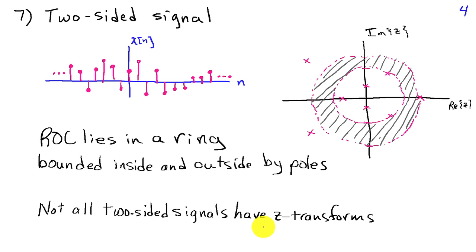The third case is if we have a two-sided signal. In other words, the signal extends in both directions. Then the ROC is going to look like a ring, and the ring is going to be bounded by poles. So we'll have a pole on the inside surface of the ring, and we'll have a pole on the outside surface of the ring. And we've seen several examples of this as well. The other thing we've noticed is that not all two-sided signals have z-transforms. There are some signals where there's no values of z for which the z-transform converges.